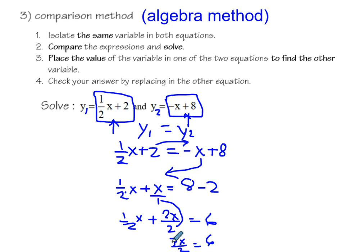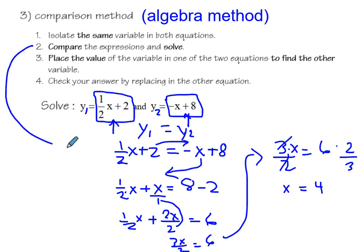So if I want to get rid of my three half, I'm going to continue here. I have three x over two equals six. So to get rid of my two, it's divided by two. So on the other side, I need to multiply by two. And three x is times. So on the other side, I need to divide. So then I'm going to find x is equal to four. So this is my step number two. This is my comparing.